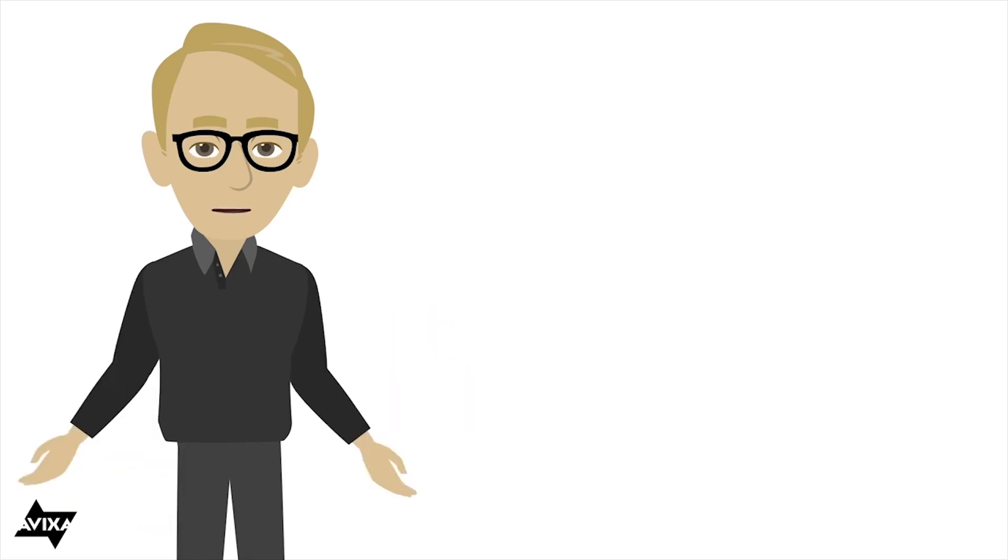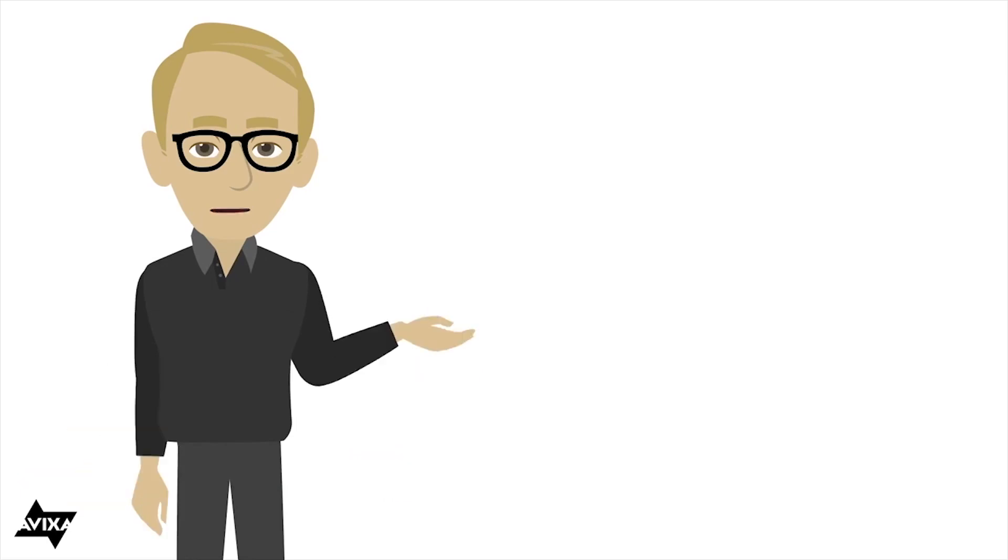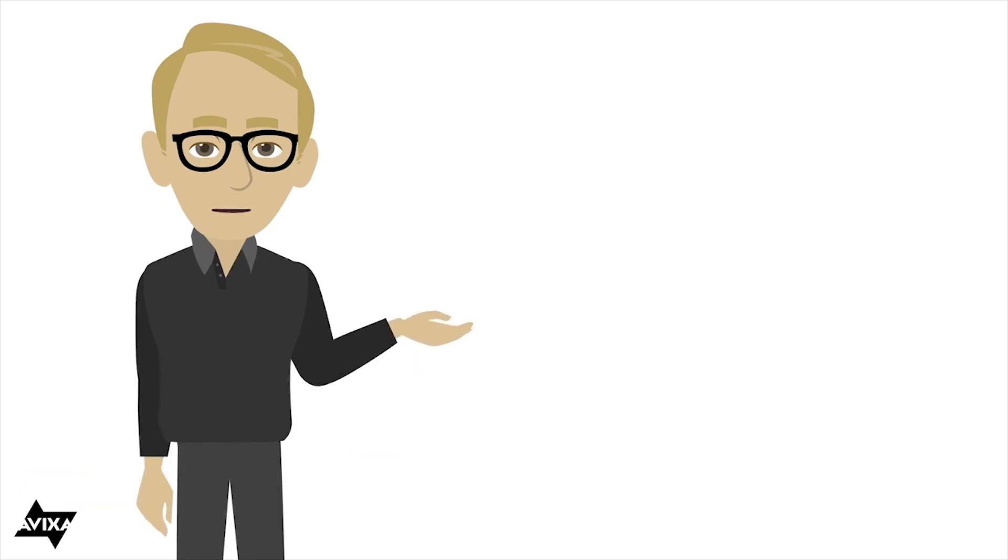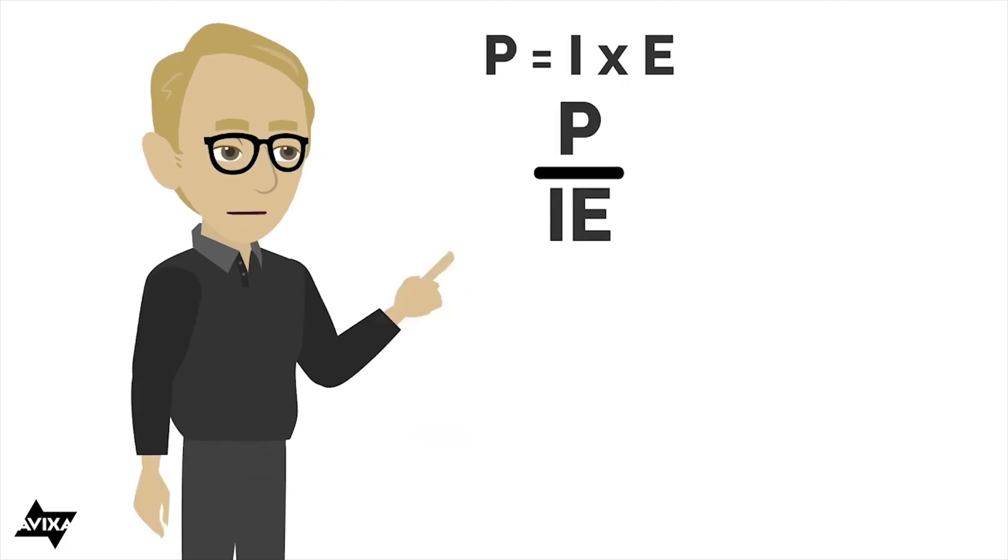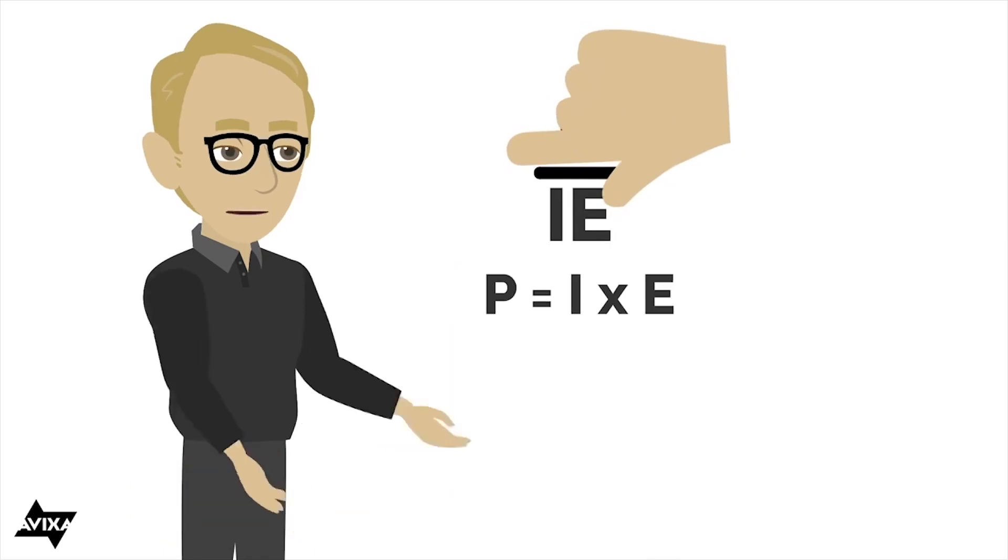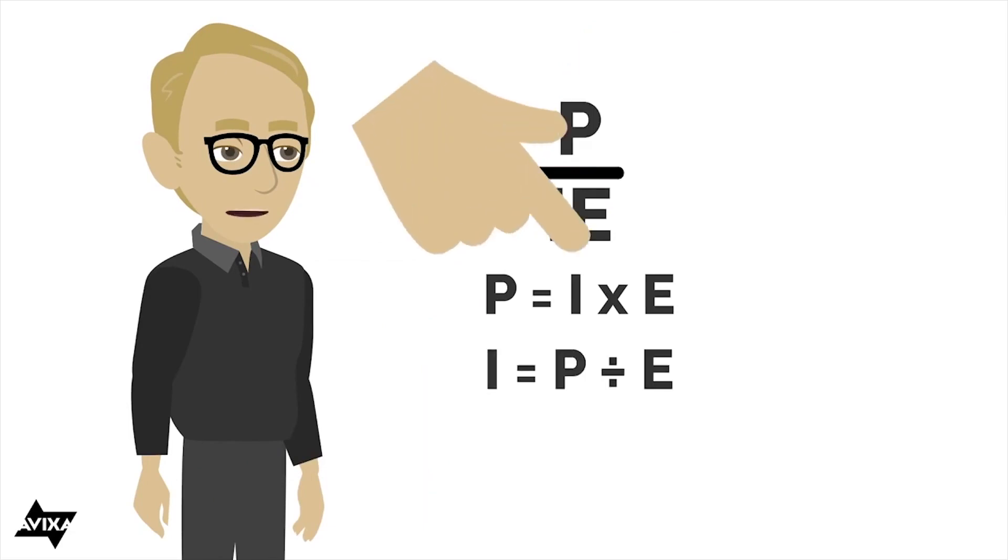We can also do something similar with power as it's related to Ohm's Law. And sometimes we know this is as easy as pi. P equals I times E. And we'll write this out just like we did VIR a moment ago. P, I, E. If I want to solve for power, put my finger over the P, just like we had a moment ago. I times E. Easy as pi. If I want to solve for the current, the power divided by the voltage. If I want to solve for the voltage, power divided by the current.